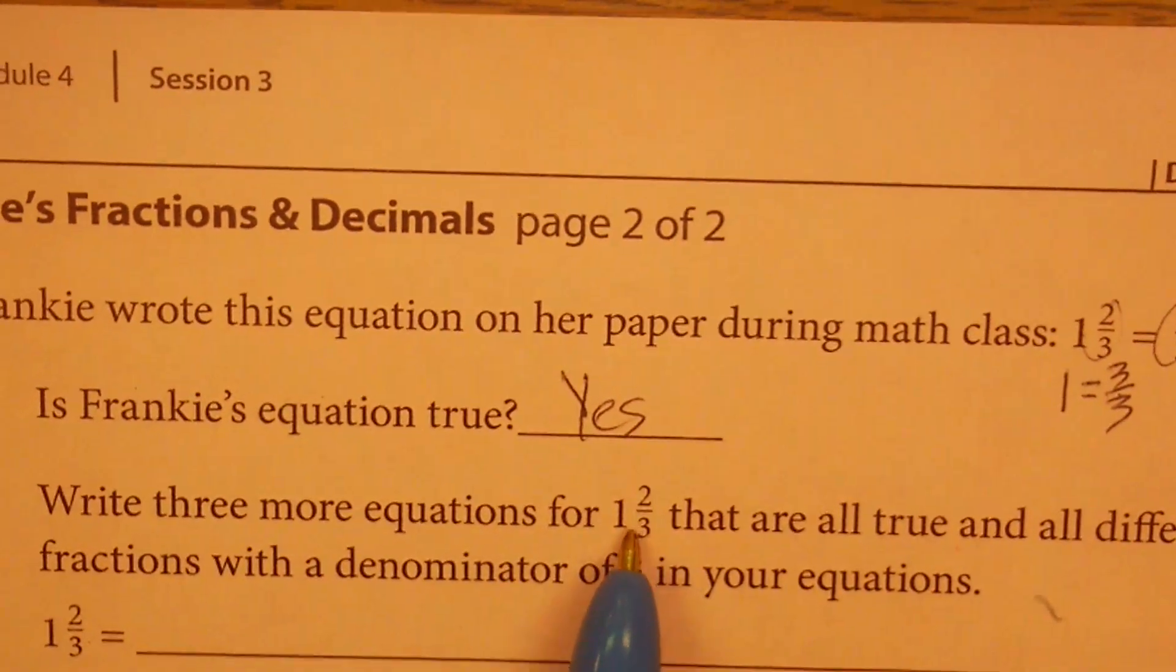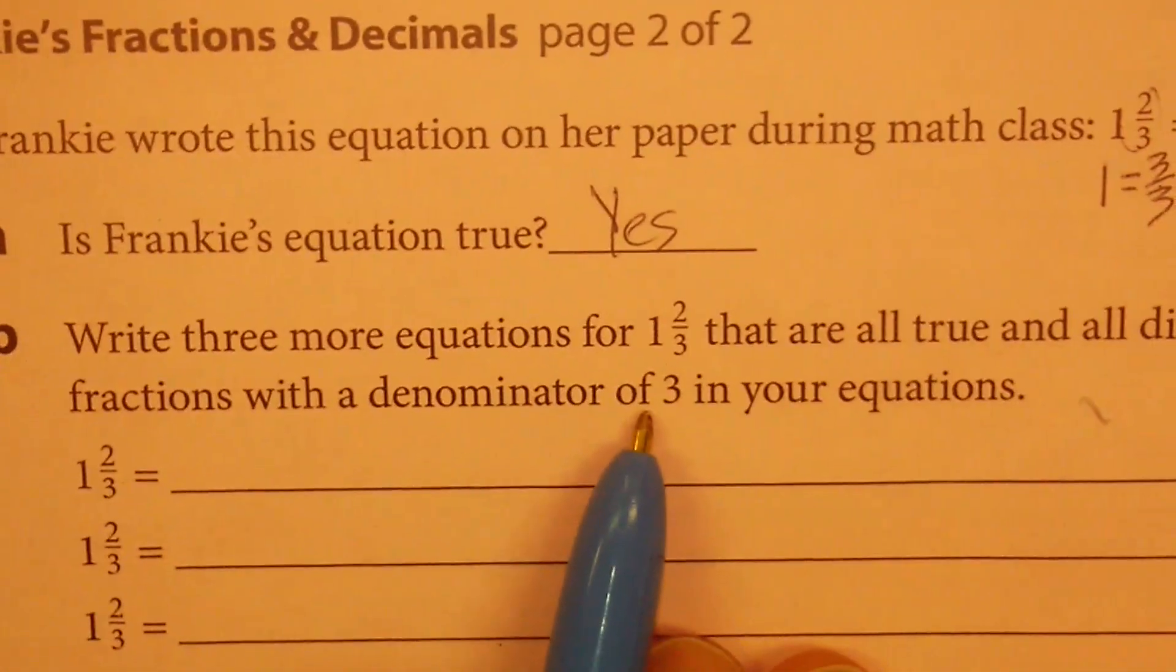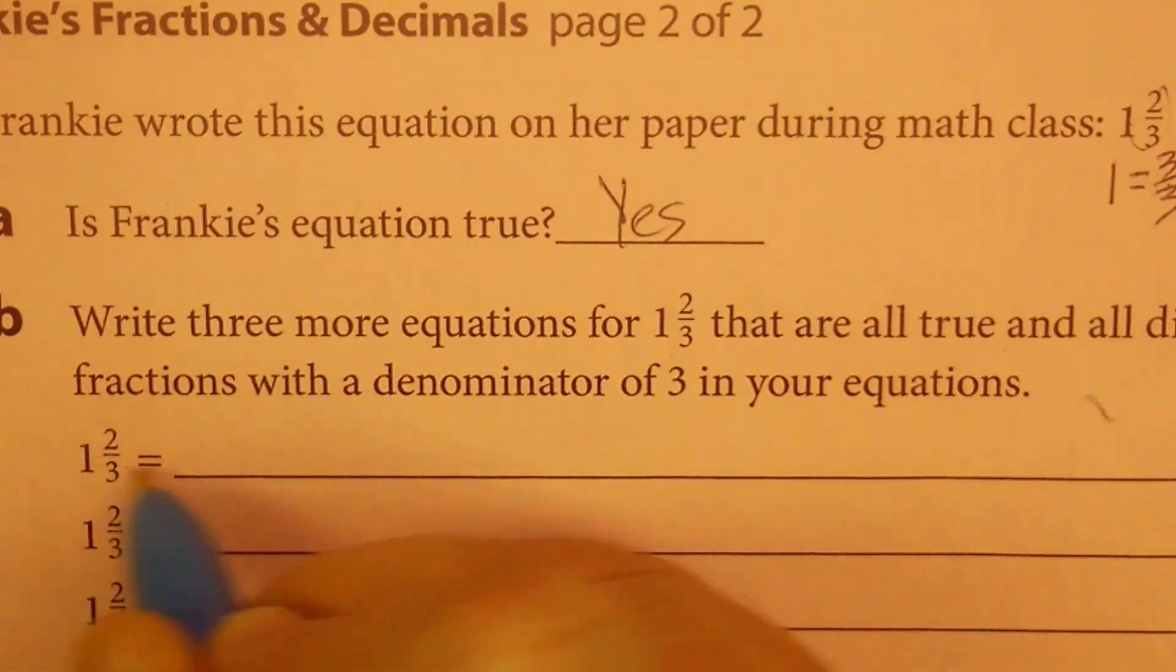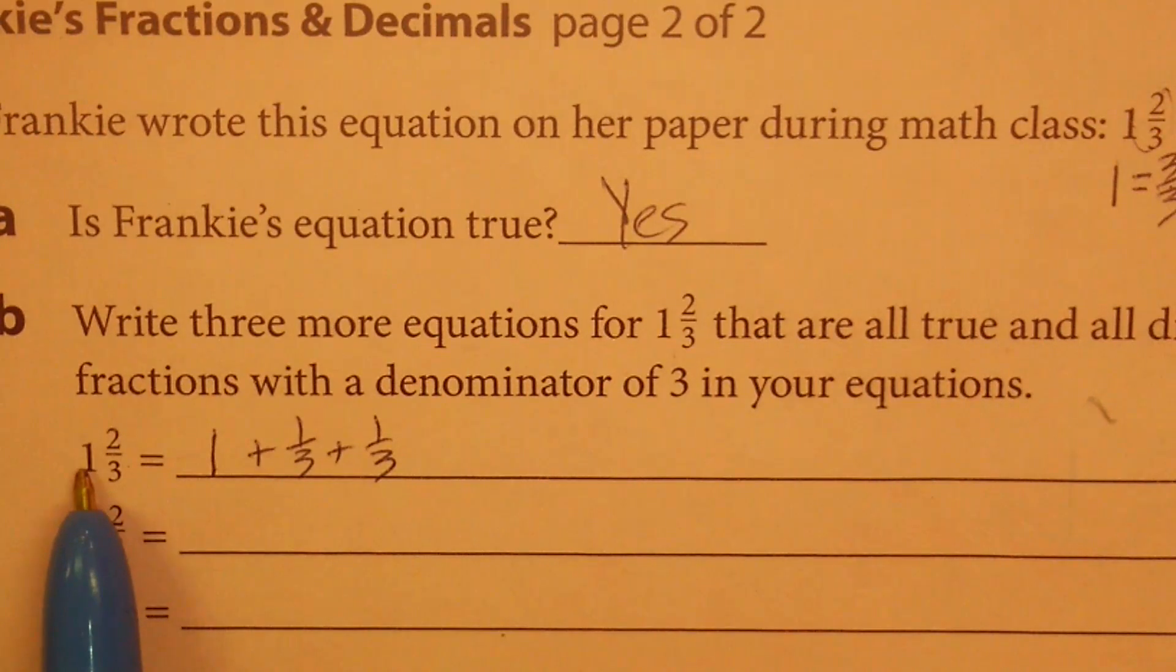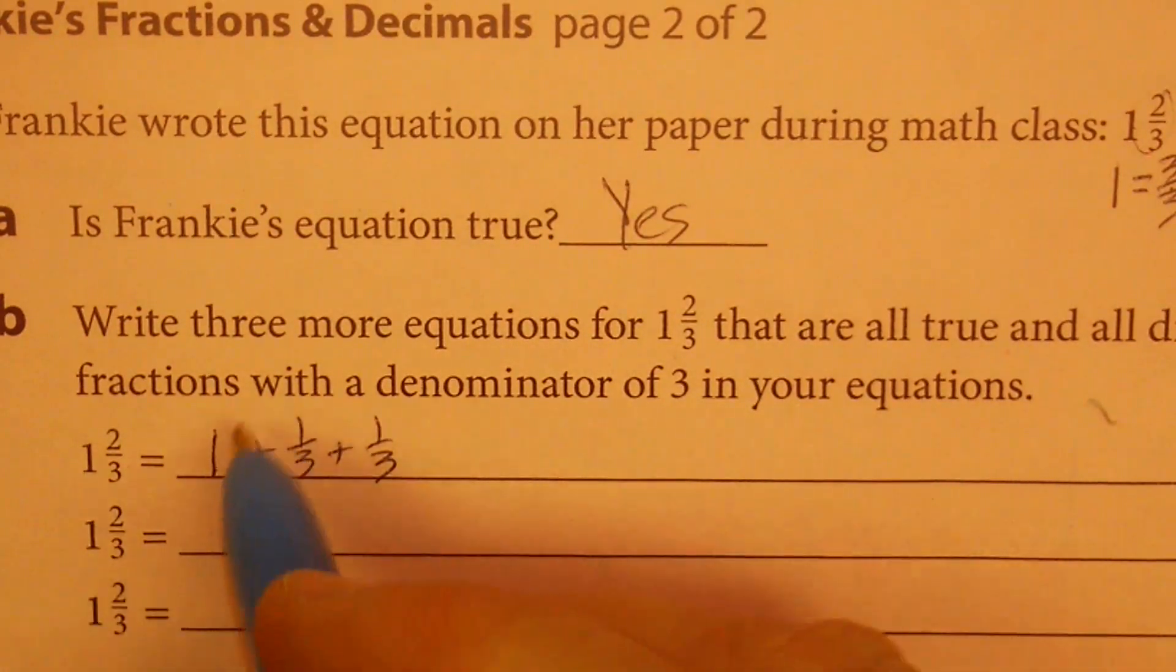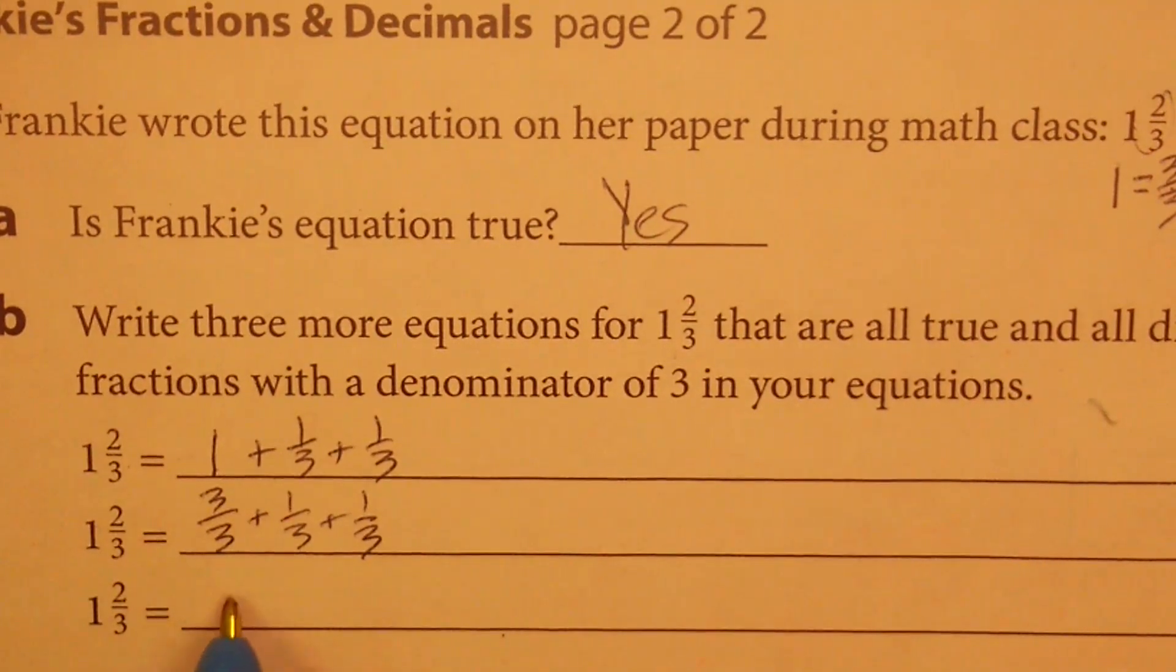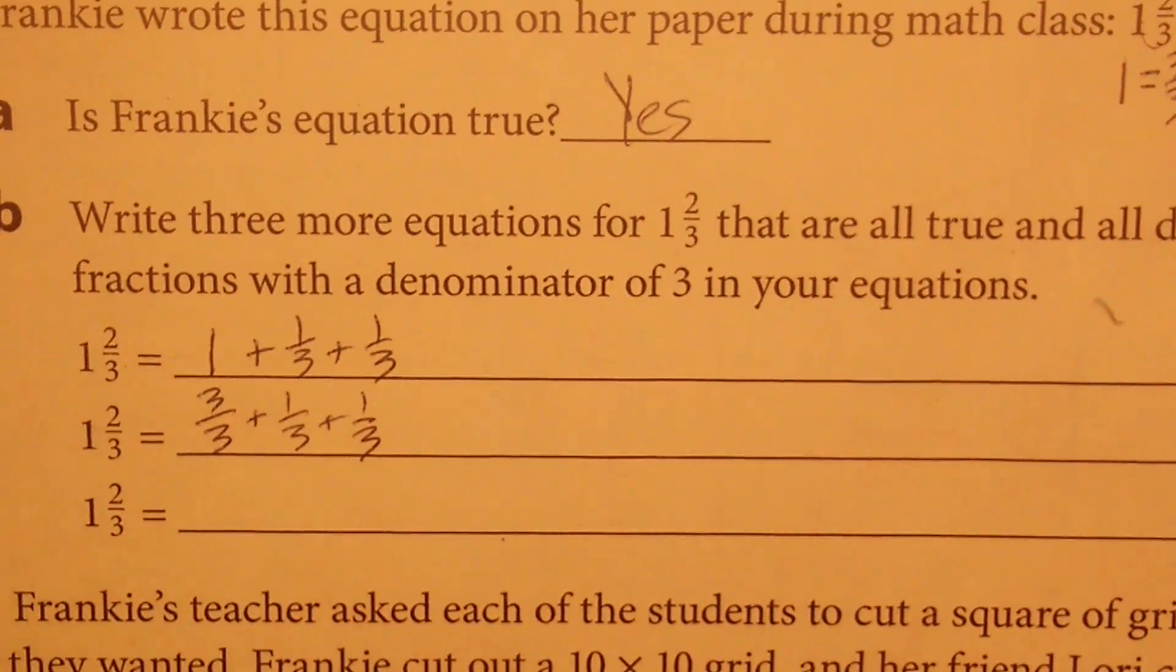Write three more equations for one and two-thirds that are all true and all different. Use only fractions with a denominator of three in your equations. Here would be an example. I could say that one and two-thirds is the same as one plus one-third plus one-third because I kept the one, but I broke the two-thirds into one-third and one-third. I could break up this one into three-thirds, and then I could say plus one-third plus one-third. Or I could even break this up even further, and I'm going to let you decide a fraction-equivalent equation where whatever you add up will equal this. I highly encourage you to break this number apart. That will be very helpful.